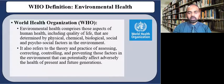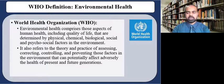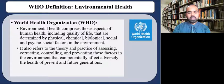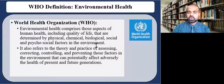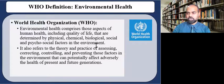First of all, how does the World Health Organization, or WHO, define environmental health? According to WHO, environmental health comprises those aspects of human health, including quality of life, that are determined by physical, chemical, biological, social, and psychosocial factors in the environment. It also refers to the theory and practice of assessing, correcting, controlling, and preventing those factors in the environment that can potentially affect adversely the health of present and future generations.